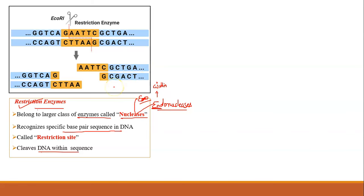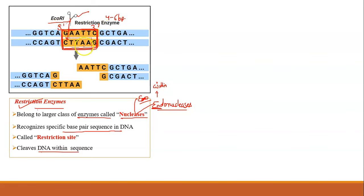For example, EcoRI recognizes the six-base-pair sequence GAATTC and cleaves within that sequence. Because of this specific cutting, restriction enzymes are called molecular scissors and have recognition sequences of four to six base pairs. These recognition sequences are palindromic — they read the same from 5' to 3' on both strands. Reading GAATTC on one strand, and reading 5' to 3' on the other strand also gives GAATTC.